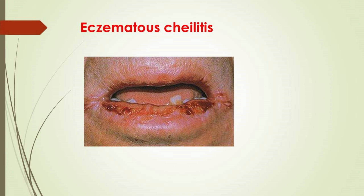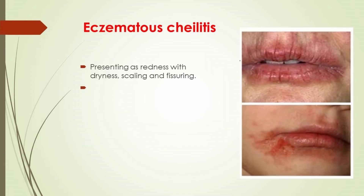Lip dermatitis presents as redness with dryness, peeling, and fissuring. Major causes are atopic dermatitis and irritant or allergic contact reactions. Treatment involves emollients and topical corticosteroids; a potent steroid may be required to bring the condition under control.